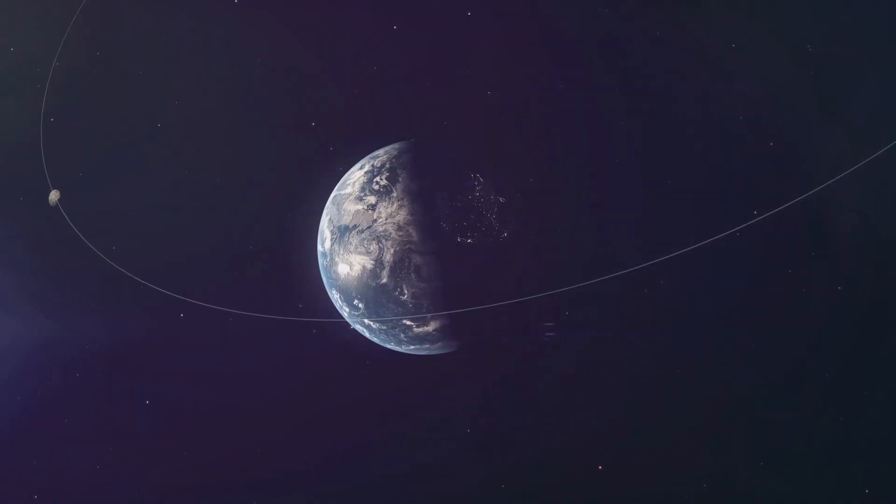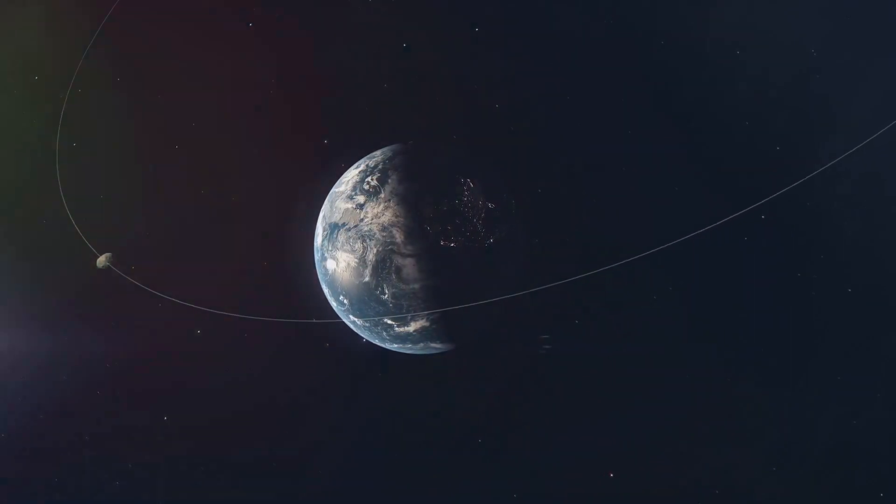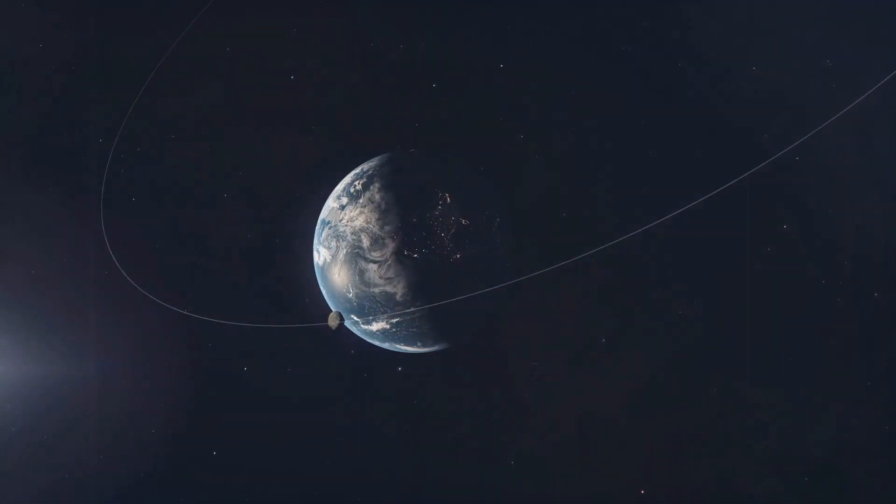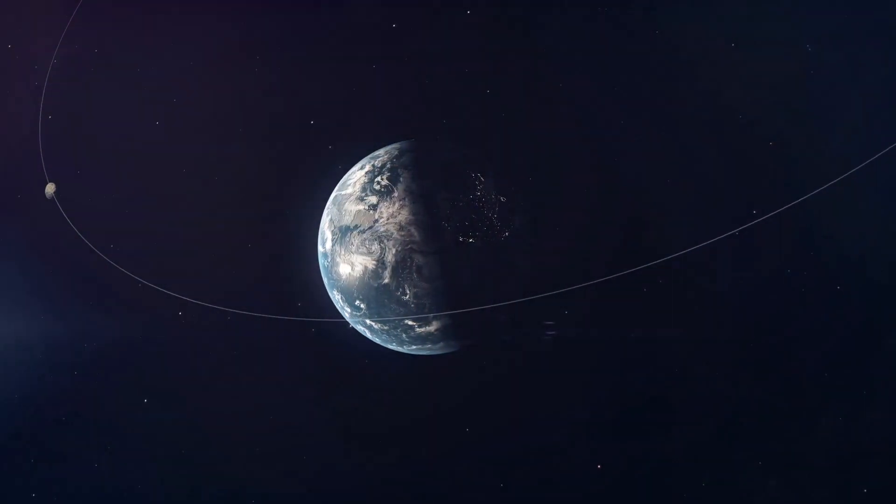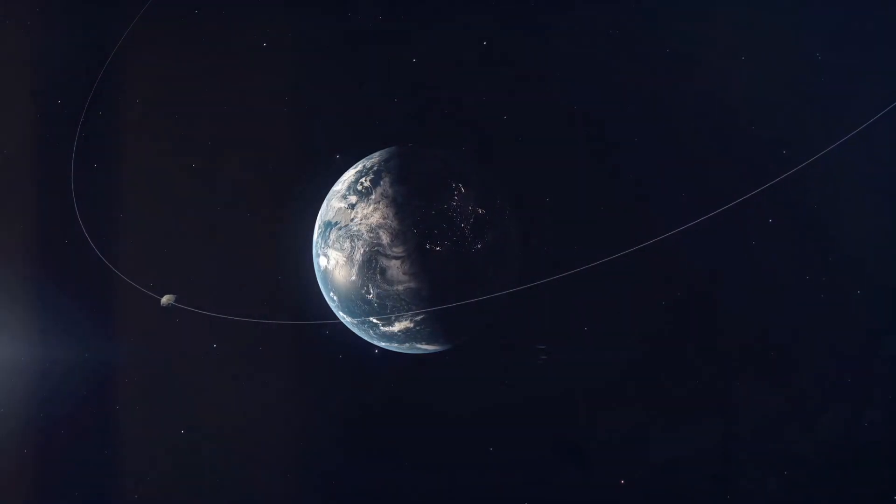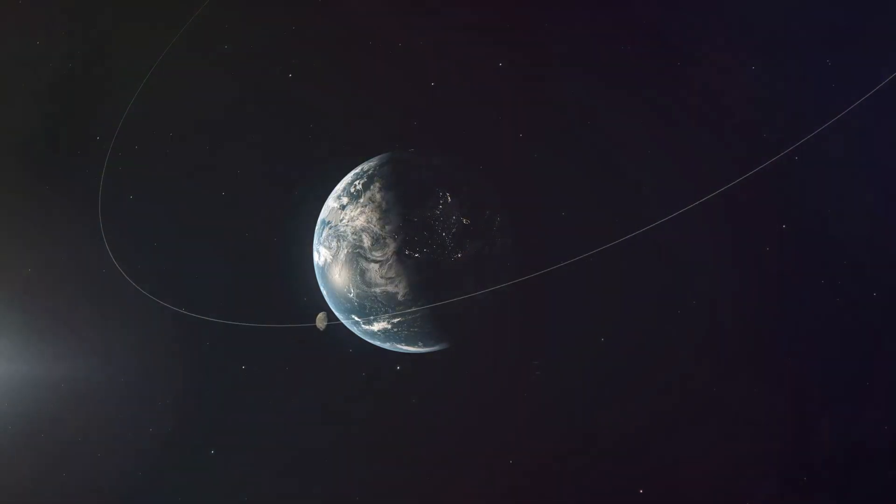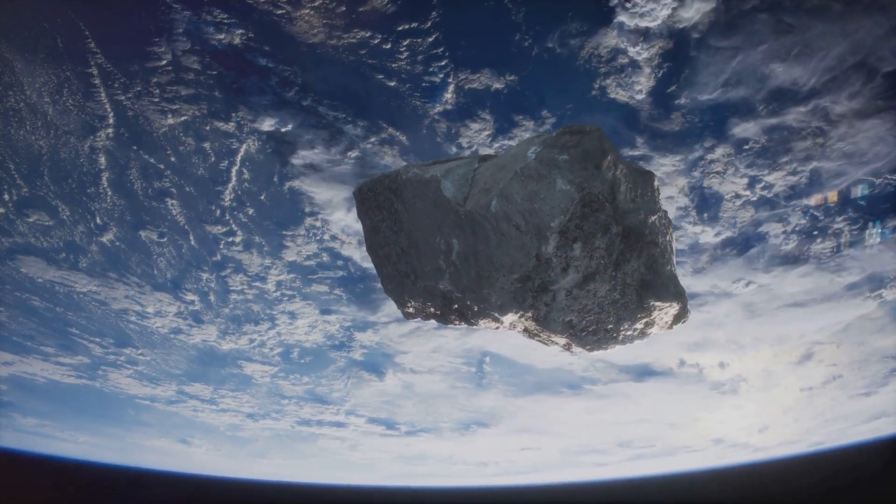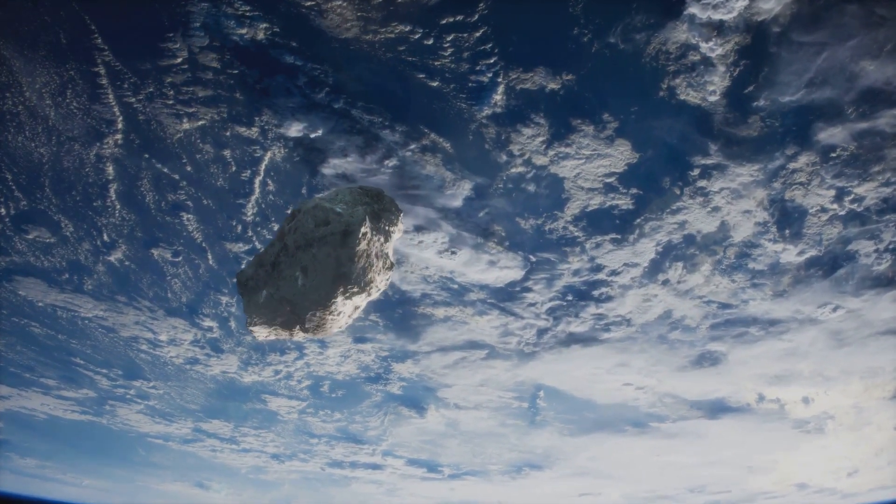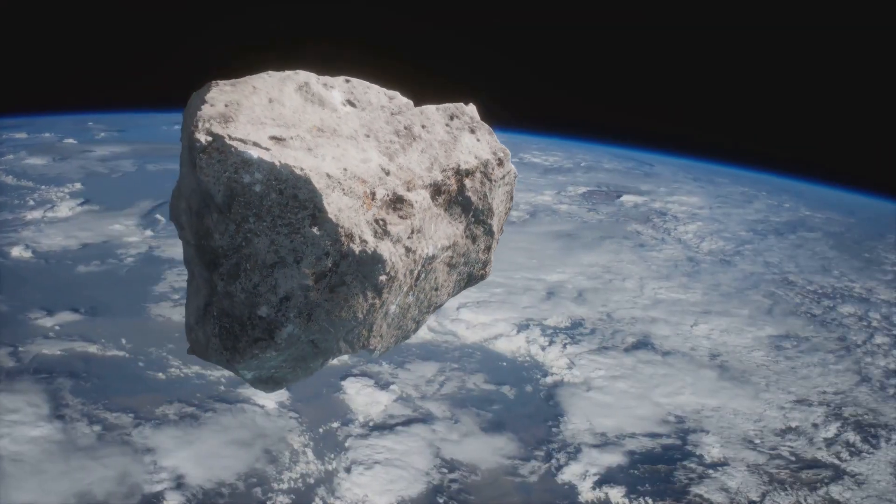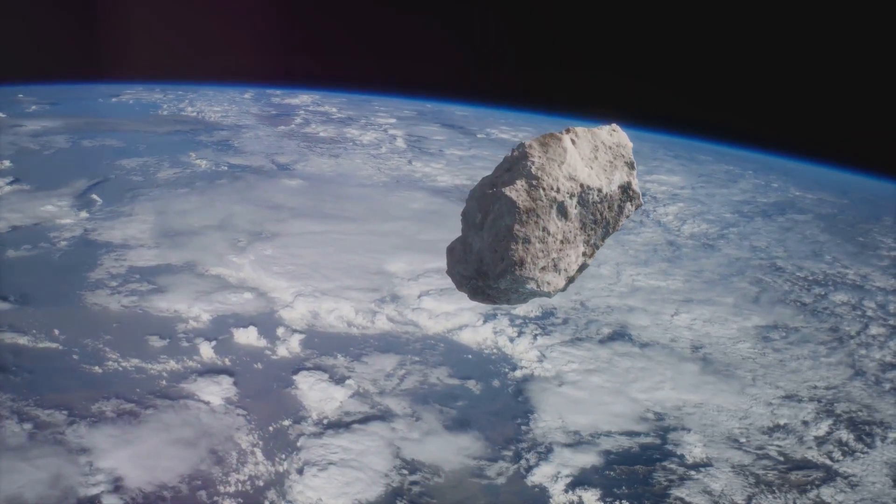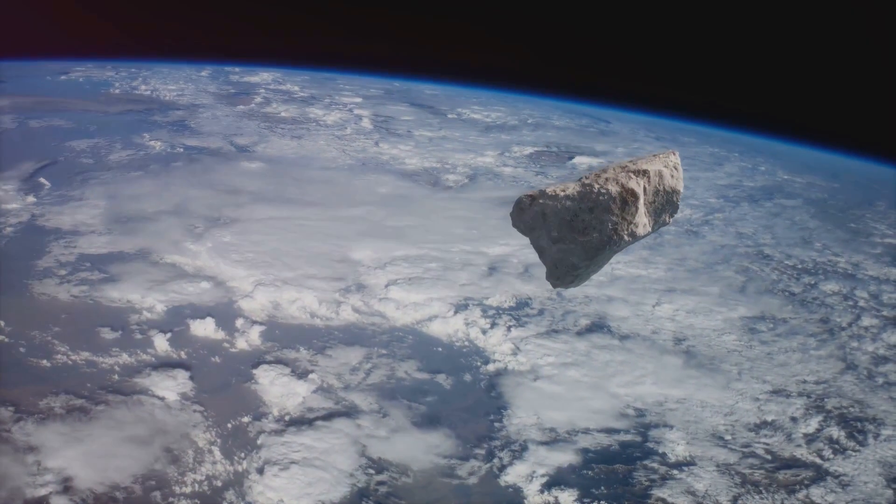The projected path of the asteroid Apophis is one of the most fascinating aspects of this cosmic traveler. Apophis is currently slated for a close approach to Earth in April 2029. Now when we say close, we're talking in astronomical terms. To put it into perspective, it's closer than some of our own satellites orbiting Earth. While the path of Apophis will bring it near to us, scientists are confident that it will not collide with Earth. These predictions are based on some of the most advanced tracking technologies and mathematical models we have at our disposal today.